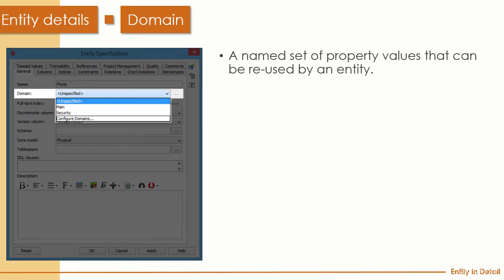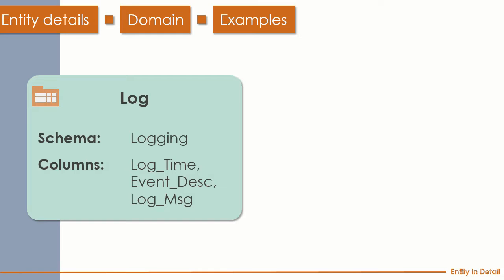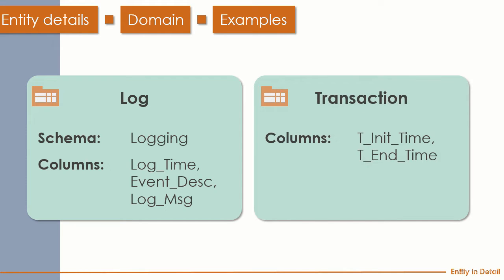The first property below the name is called Domain. A domain is a named set of properties that can be reused by any entity. For example, you can define a Log domain and when an entity applies the Log domain, it comes with all the properties you set — such as the schema or columns included. You can also have a Transactions domain, and when you set a table as a transaction type, all those columns come along with your entity.